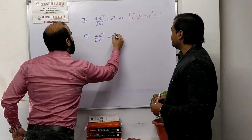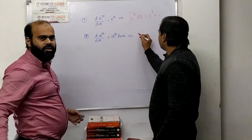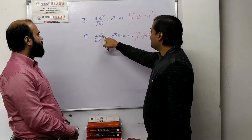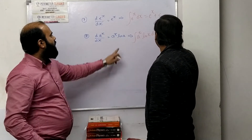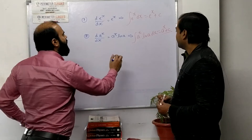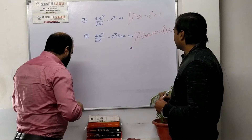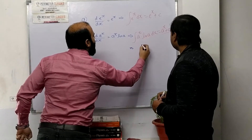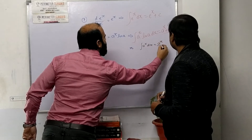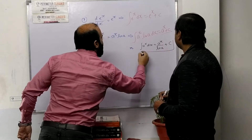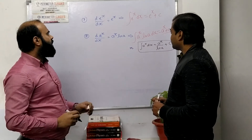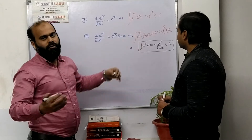Now, the differentiation of a^x is a^x · ln a. So if we integrate a^x · ln a dx, we get a^x + C. Generally, we write the formula as: the integral of a^x dx equals a^x divided by ln a, plus C. The constant ln a comes out of the integral and goes into the denominator.